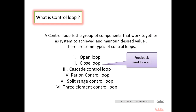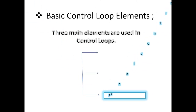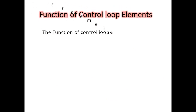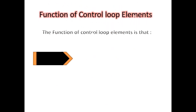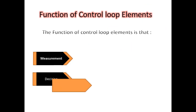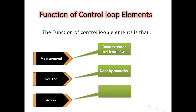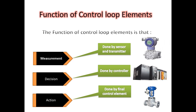Closed loop has two types: feedback control loop and feed-forward control. The basic control loop elements — three main elements are used in control loops: sensor or transmitter, controller, and the final control element. Their functions are measurement, decision, and action. Measurement is done by sensors or transmitters, decision is done by the controller, and action is done by the final control element.